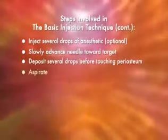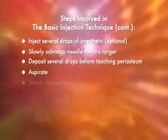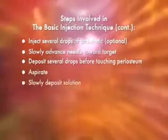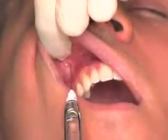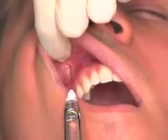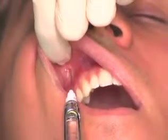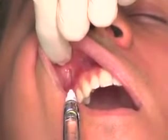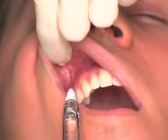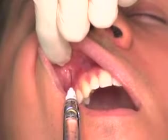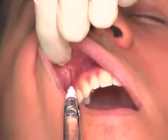Aspirate. Slowly deposit the local anesthetic solution and communicate with your patient: "I'm doing this slowly so that it's more comfortable, but I'm not going to give you any more than you need." Deposit several drops of local anesthetic before touching the periosteum.